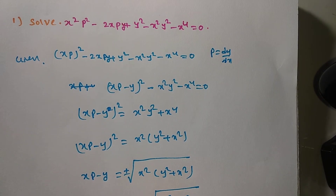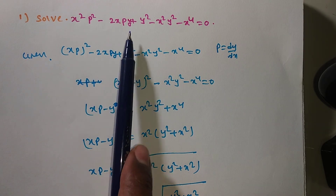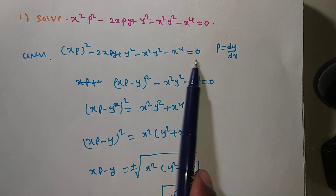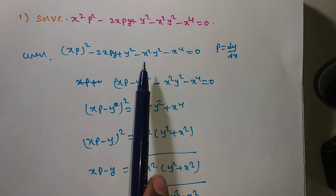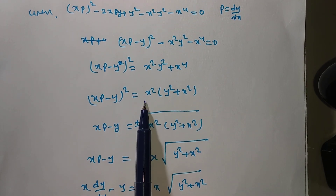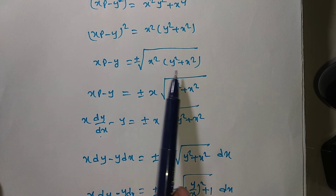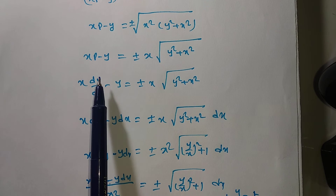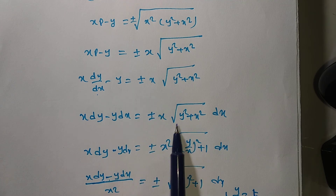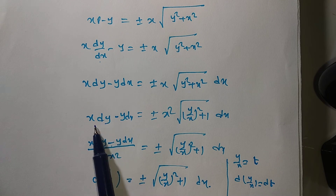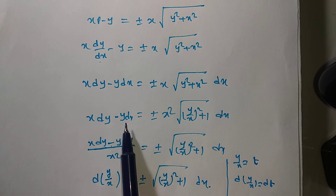Before going to the second problem, let me explain the first problem once more. Given: (xp)² - 2xyp + x²y² - x⁴ = 0. This is in a² - 2ab + b² form, giving (xp - y)² = x²(y² + x²). Applying square root: xp - y = ±x√(y² + x²). Since p = dy/dx, write x dy - y dx = ±x√(y² + x²) dx. Note that x dy - y dx is not x dy + y dx; the minus sign means we divide by x² to get the derivative of y/x by inspection method.